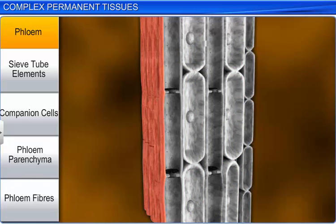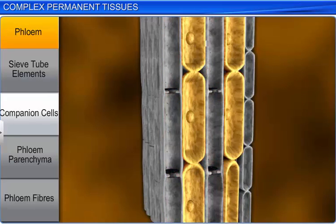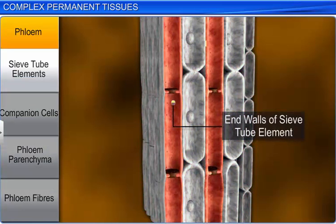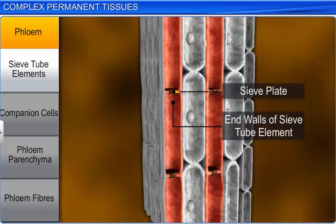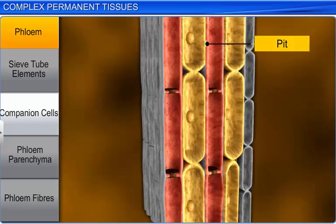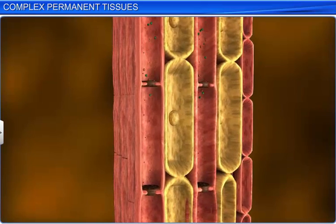Sieve tube elements are tube-like structures arranged in a longitudinal manner, closely associated with companion cells, which are parenchymatous in nature. The end walls of sieve tube elements are perforated in a sieve-like manner, forming sieve plates. The functions of sieve tubes are controlled by the nucleus of the companion cells. Sieve tube elements and companion cells are connected by pit fields present between their common longitudinal walls, and companion cells help maintain the pressure gradient in the sieve tubes.